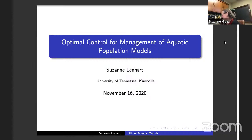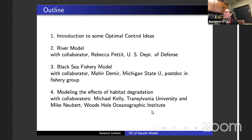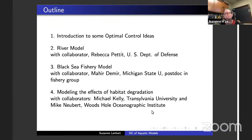I'm going to talk about three examples. I know a lot of you are involved with control theory, so I'll just give you the approach I'm talking about today. Then I'm going to talk about a river model — basically about populations in a river. Then I'll talk about a Black Sea fishery model that's more concrete, with data from the Black Sea. And then a more theoretical model about the effects of habitat degradation. The first work is a collaboration with Rebecca Pettit, a former PhD student of mine who now works for the U.S. Department of Defense. The second paper is with another former student, now a fishery postdoc at Michigan State. And Mike Kelly from Transylvania University and Mike Newbert are collaborators on the last project.